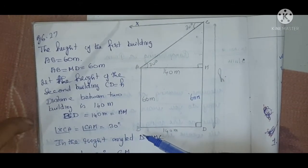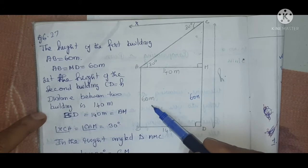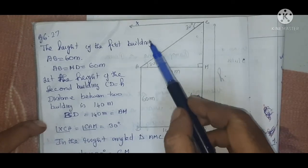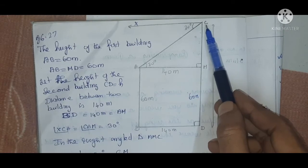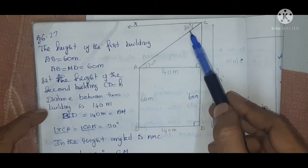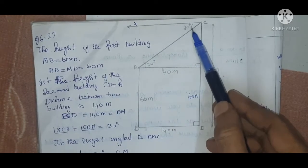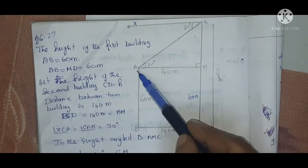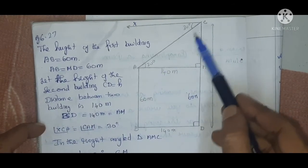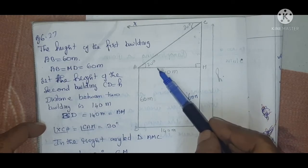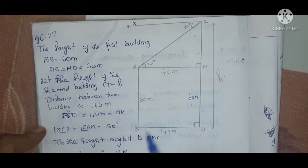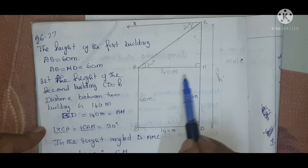AB is the height of the first building = 60 meters. CD is the height of the second building = H. From the top of the second building, the top of the first building is seen at an angle of depression of 30°, so angle XCA = 30°. XC is parallel to AM, and AC is the transversal, so alternate angles are equal: angle CAM = 30°. The distance between the two buildings, BD = 140 meters, equals AM. AB is parallel to MD, and both are 60 meters.